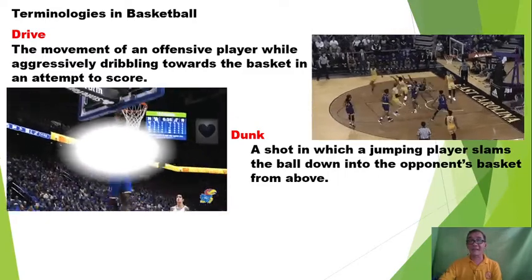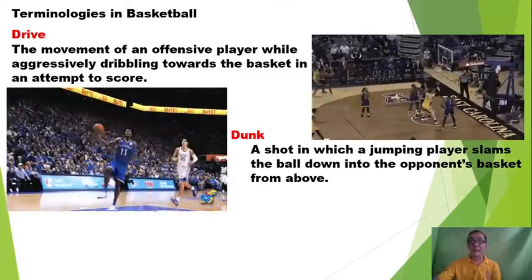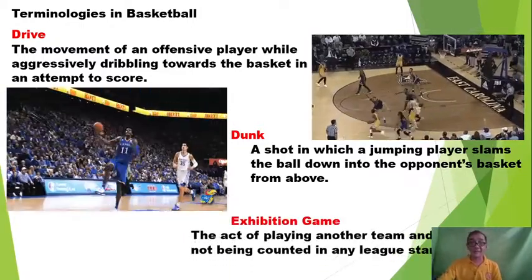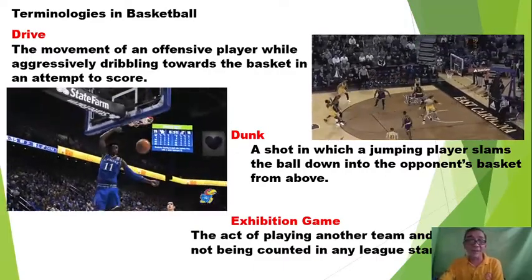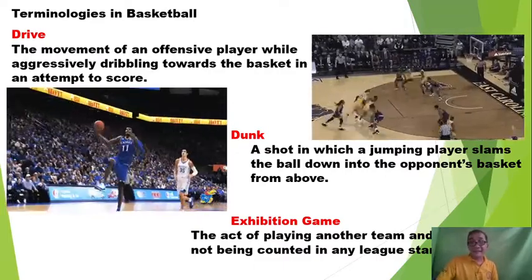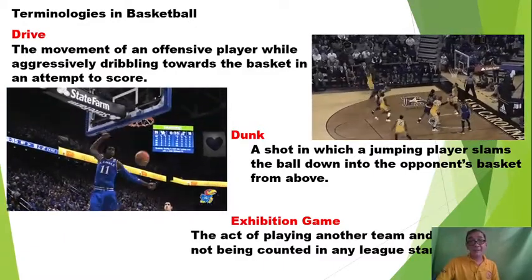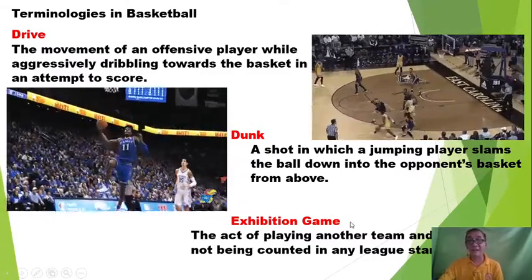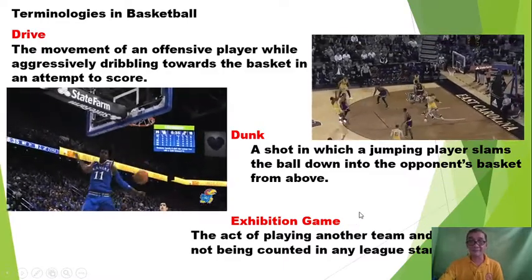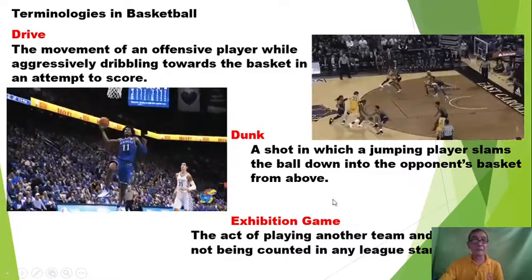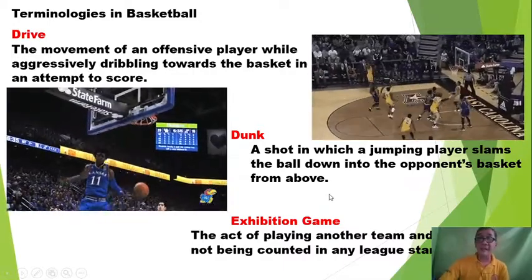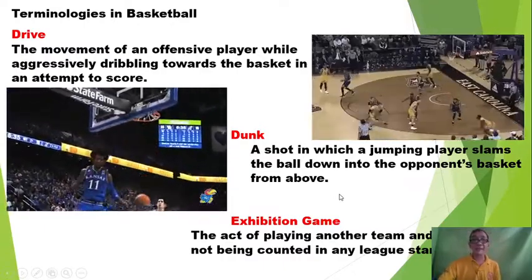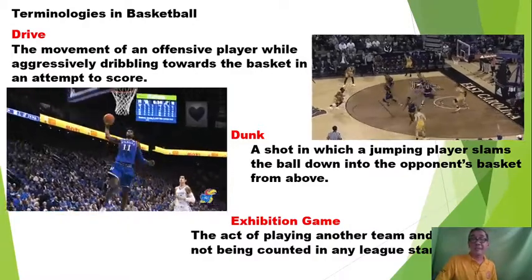The last one is the dunk — a shot in which a jumping player slams the ball into the opponent's basket from above. And of course, exhibition game — the act of playing another team where the outcome is not counted in any league standing. Some of the purposes of this is only to evaluate the team, and also some use it as a fundraising game. I hope you familiarize these terminologies in basketball and enjoy what you have learned.